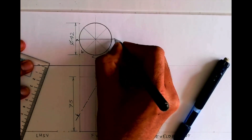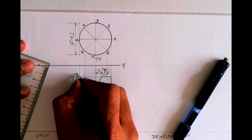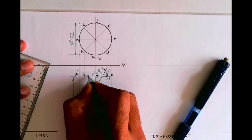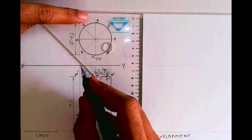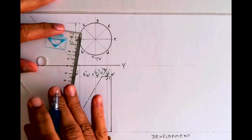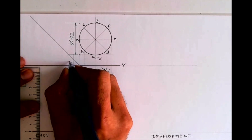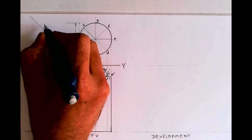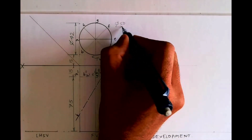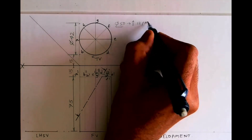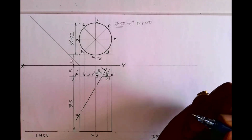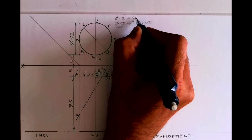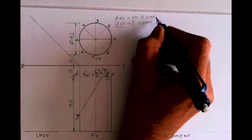I'm dividing into eight parts and labeling a, b, c, d, e, f, g, h, and a-dash in the front view. For side view I will take a 45 degree line. The dimensions given are 15 and 15 as per the board exam paper. If the diameter is more than 50mm, do 12 parts; if less than 50mm, do 8 parts. In this case the diameter is 42mm, so I'm dividing into eight parts.